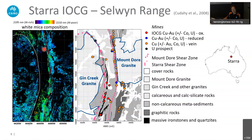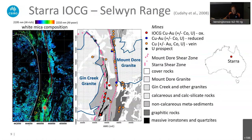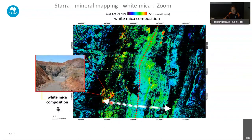Black areas are masked out — rivers, trees, or simply no white mica on the surface. What's interesting is that along the Mount Dore shear zone we've got a high intensity of white micas. More interestingly, when we move to the west and east of the zone, the aluminum content in the white micas is changing, and we're getting more phengitic micas to both sides. The next slide shows a close-up of the southern area around the Starra open pit, where from the central Mount Dore zone going west and east we end up with more phengitic white micas.